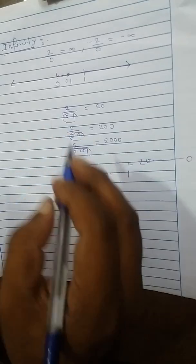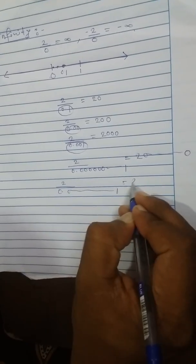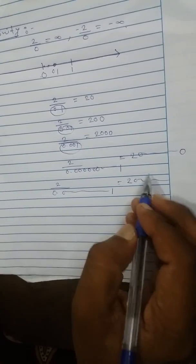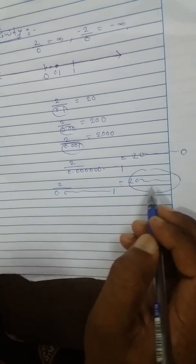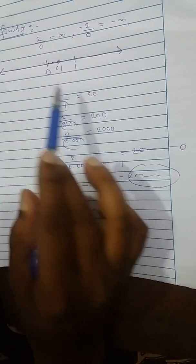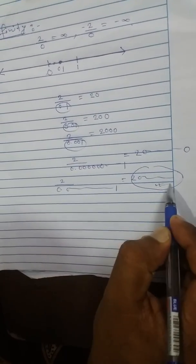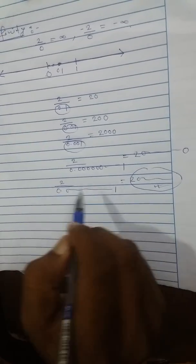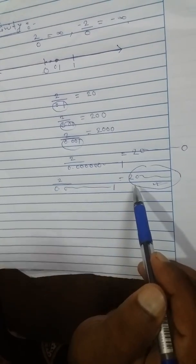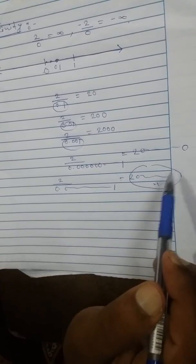Now let us divide two by 0.00...01 with 100 zeros. You can imagine how big our number is — it is 2 followed by 101 zeros. This number is huge enough. We have brought the denominator very close to zero, still not zero. This is almost an unmemorable number. As we come very close to zero, the number becomes enormous — our memory has stopped here.